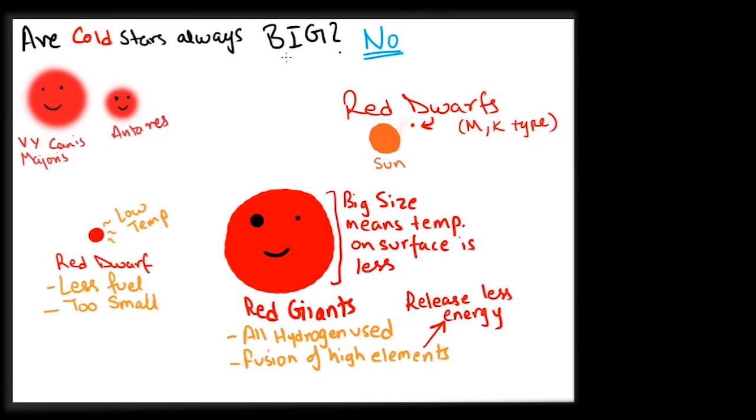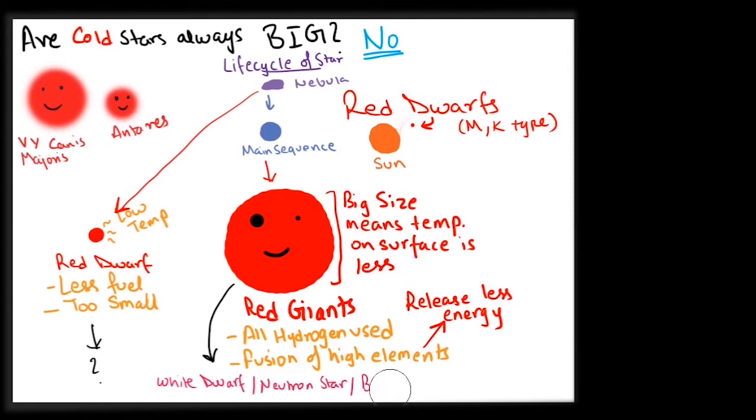In this lifetime, a star goes through various stages, and various temperature and size changes among others. Our Sun will become a red giant in 5 billion years.